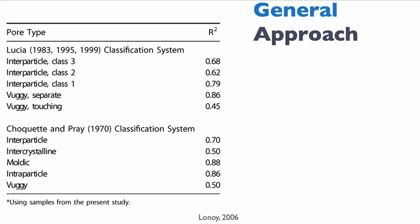In 2006, Harvey Lenoir took this basic idea of the petrophysical classification, which a lot of companies were doing internally, and he tried to come up with a universal classification that would maximize the predictability of permeability based on porosity.